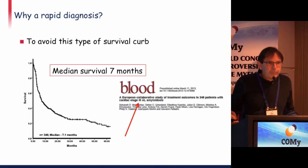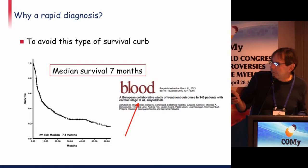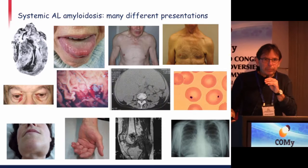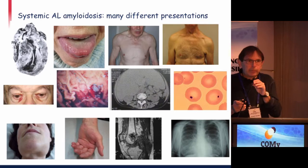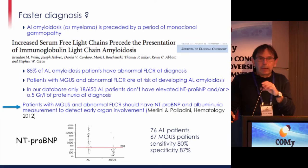Once you have done the diagnosis and typed the amyloidosis, you have to act rapidly to avoid poor survival outcomes. If you wait too long and the patient presents with severe heart disease at Mayo stage 3, the outcome is really bad. It is difficult to diagnose amyloidosis because it can present in many different ways. So how can you achieve a faster diagnosis?